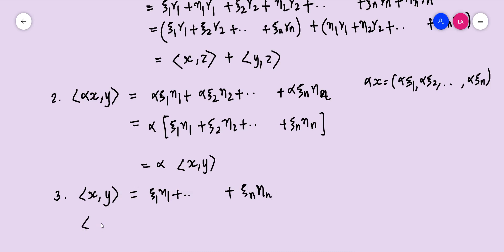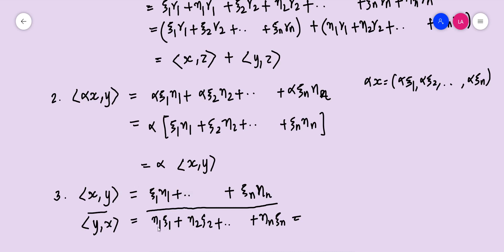The third property: inner product(x,y) equals theta_1*eta_1 + ... + theta_n*eta_n. Now the conjugate of inner product(y,x) equals the conjugate of (eta_1*theta_1 + eta_2*theta_2 + ... + eta_n*theta_n). Since all components are real numbers, the sum is real, so its conjugate is the number itself. This equals theta_1*eta_1 + ... + theta_n*eta_n, which is inner product(x,y). So the conjugate symmetry property is proved.